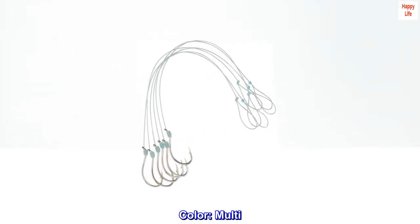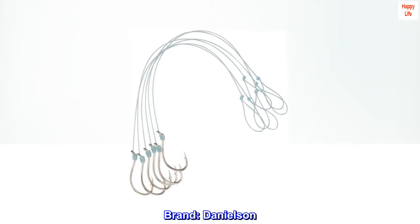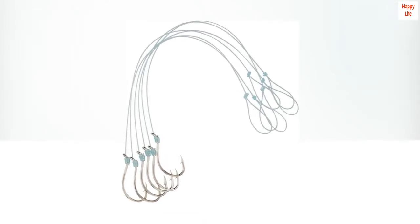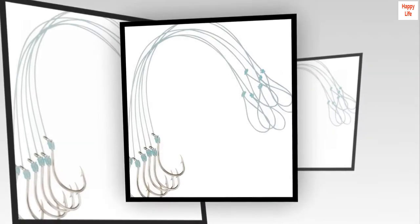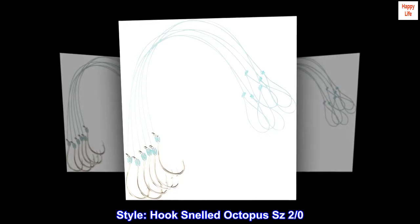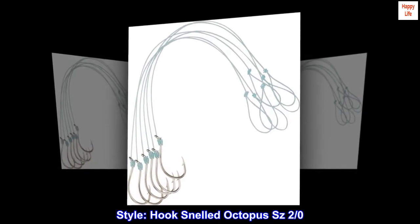Color: Multi. Brand: Danielson. Size: Size 2 over 0. Material: Blend. Style: Hook Snelled Octopus SZ 2 over 0.